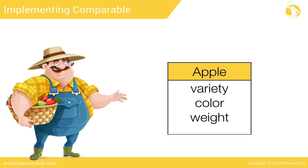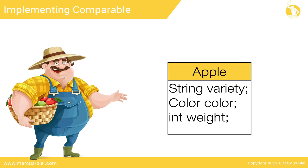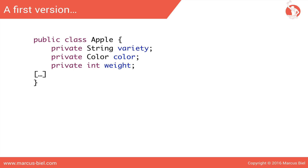But one step at a time. Based on the farmer's requirements, we first have to design an Apple class. In our example, every apple has a variety, a color, and a weight. For illustrative purposes, keeping things simple: the variety will be represented as a String, the color as an enum, and the weight as a primitive int. So here is our first version of class Apple. Because our program will sort apples, the Apple class needs to implement the Comparable interface. Comparable is a generic interface — with Apple in angle brackets, we define that an object of type Apple can be compared to other Apple objects.